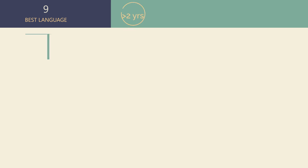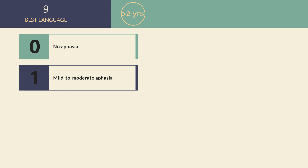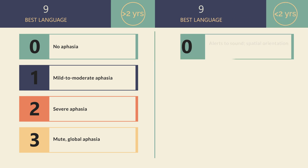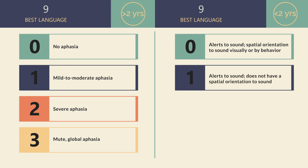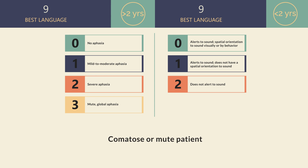In children over two years of age, score 0 if there is no evidence for aphasia. Score 1 for some obvious loss of fluency or facility of comprehension, with reduction of speech or comprehension making conversation about provided material difficult or impossible. Score 2 for communication through fragmentary expression where the range of information exchanged is limited. Score 3 if the patient is mute or if speech production and auditory comprehension are not usable, or there is global aphasia. For children aged four months to two years, score 0 if the patient alerts to sound and has spatial orientation to sound visually or by behavior. Score 1 if the patient alerts to sound without spatial orientation. Score 2 if not alert to sound. Comatose, stuporous, or mute patients score 3 on this item.